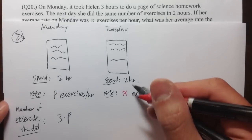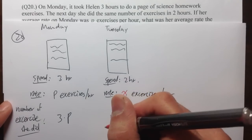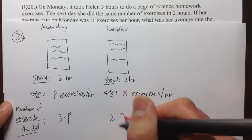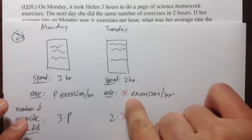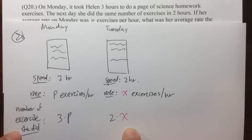Okay, so right here, I have two times X for Tuesday. So I have two times X. Again, use the time times the rate. This will give us the number of exercises that she did.